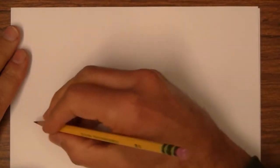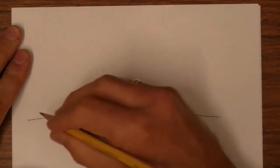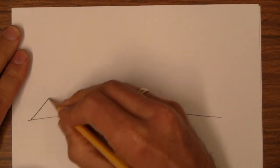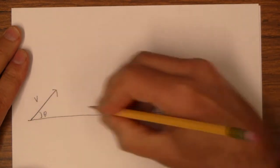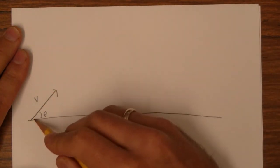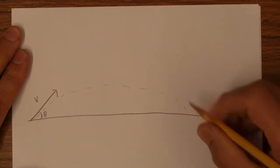In this video I'm going to derive a range equation. By range equation, I mean an equation that if you give me the launch velocity and the angle, I can tell you how far this projectile is going to travel.